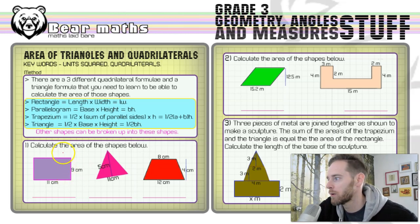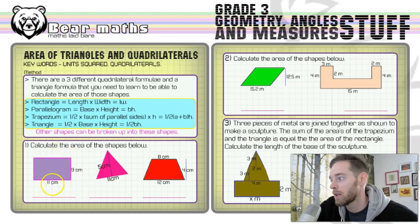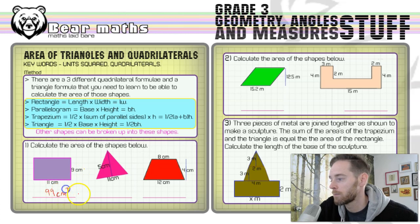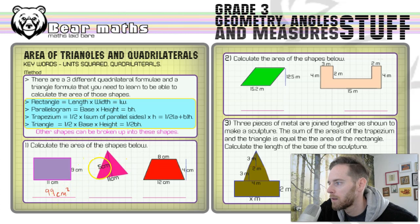Starting off simply — find the area of the shapes below. This is a rectangle: 9 times 11 or 11 times 9 equals 99. You do centimeters times centimeters and get centimeters squared — that's our unit squared. Next is a triangle with base 5 and height 11.